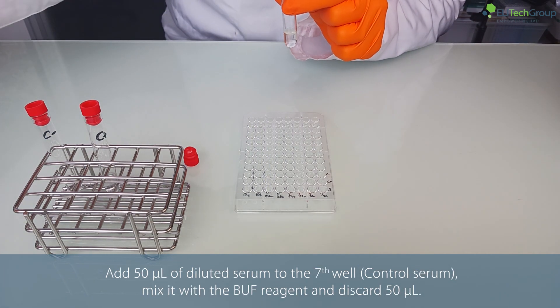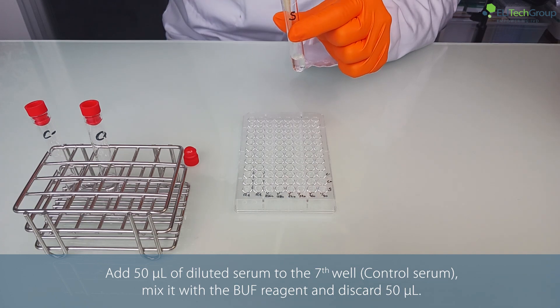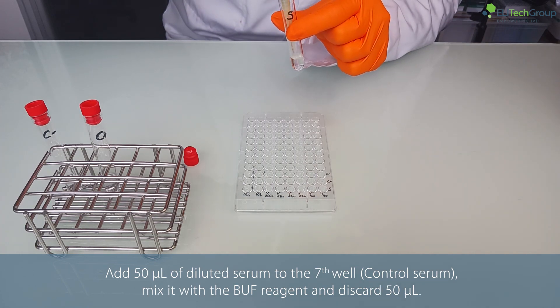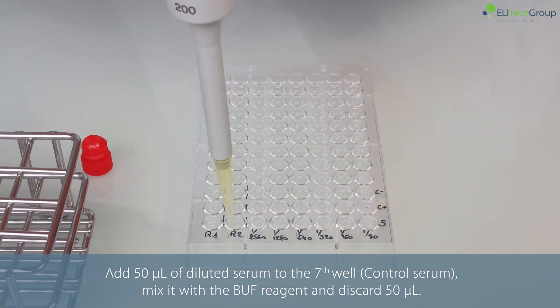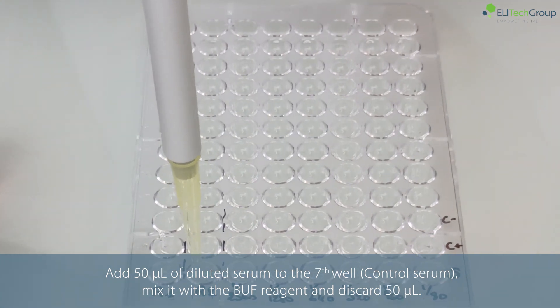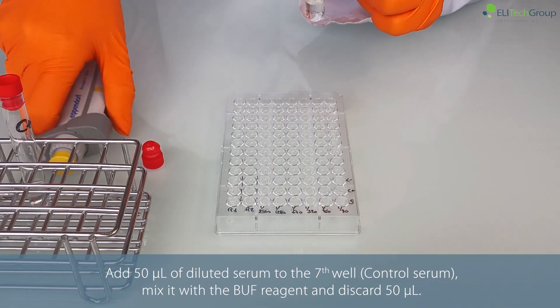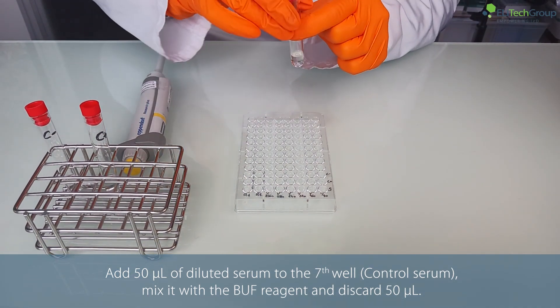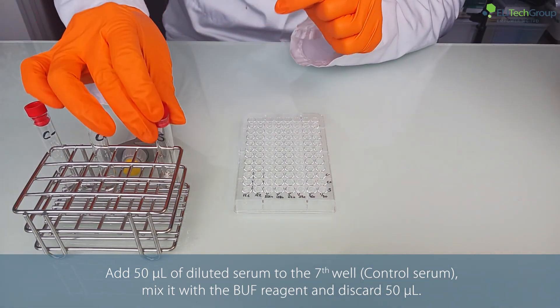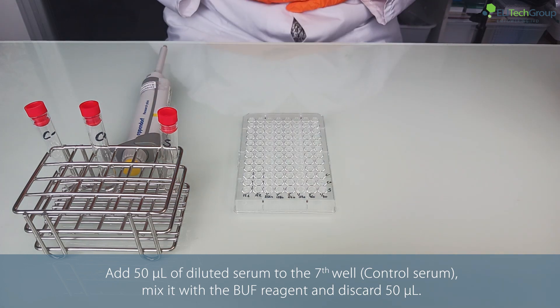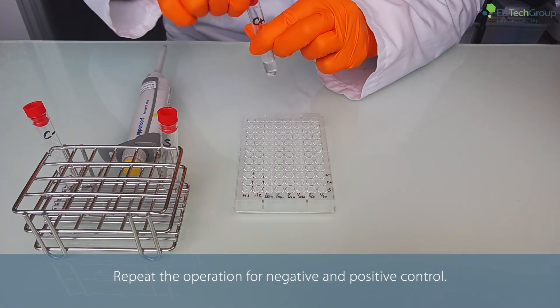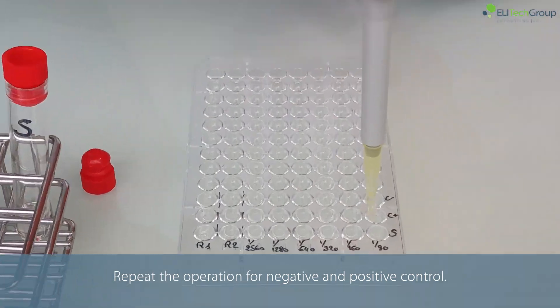Add 50 microliters of diluted serum to the seventh well, mix it with the buff reagent, and discard 50 microliters. Repeat the operation for negative and positive controls.